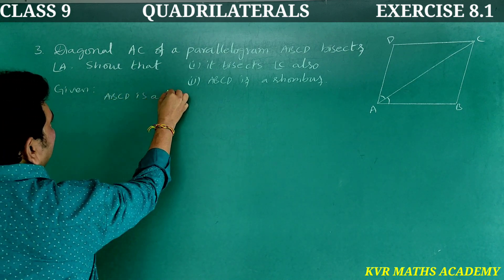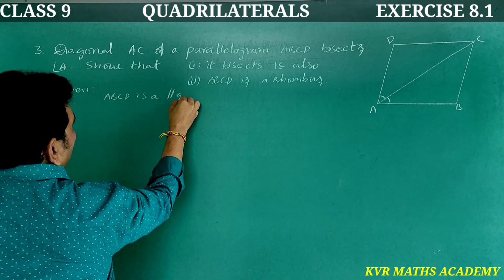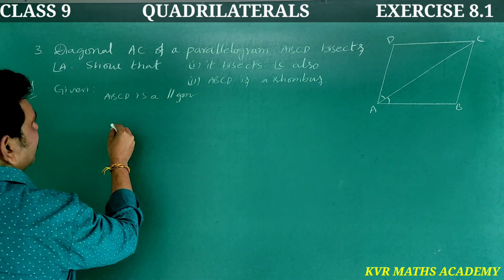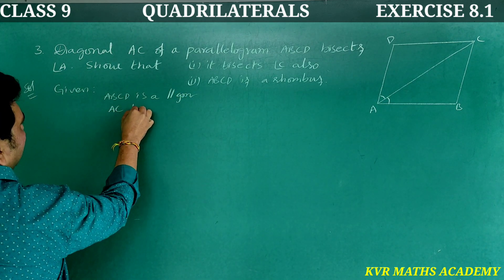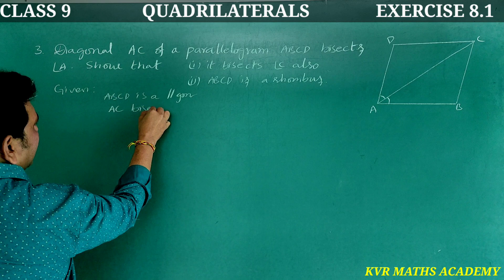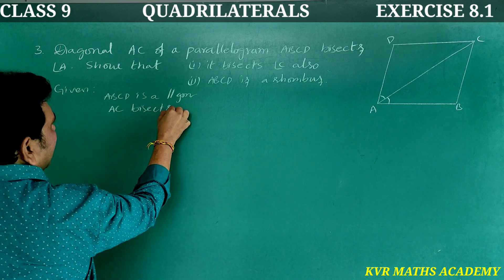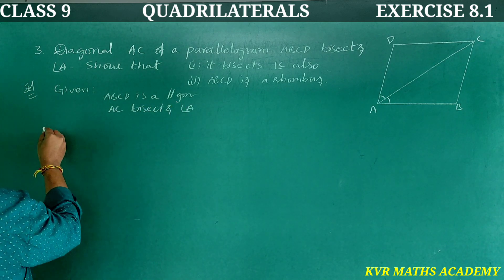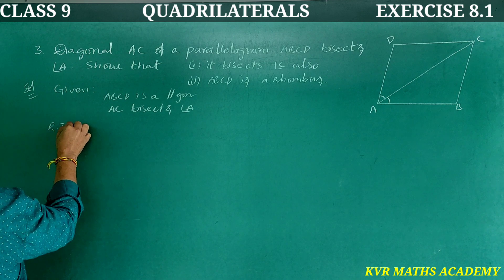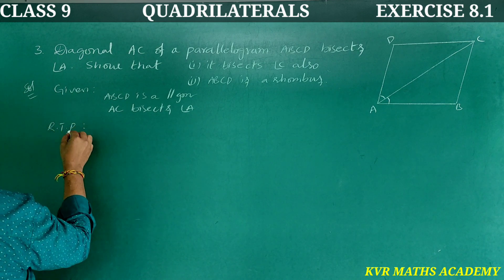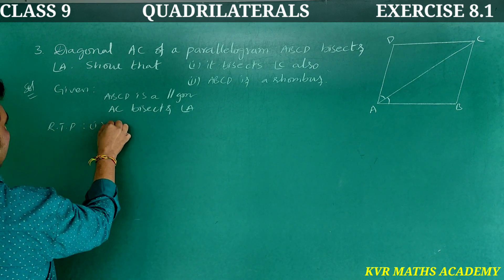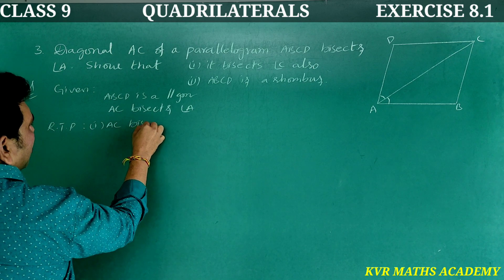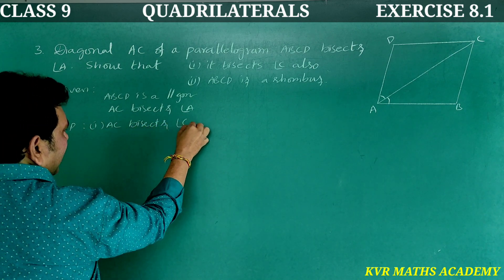ABCD is a parallelogram. AC bisects angle A. What we have to prove: First, AC bisects angle C. Second, ABCD is a rhombus.